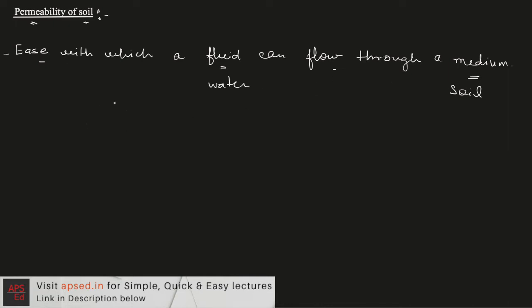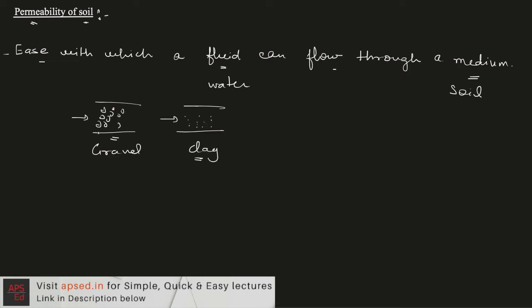If we have two soil samples — one with coarse gravel and another with fine sand, silt, or clay — and we try to pass water through each, it will be relatively much easier for water to pass through the gravel-based sample than the clay-based sample. The property responsible for this difference is the permeability of soil.